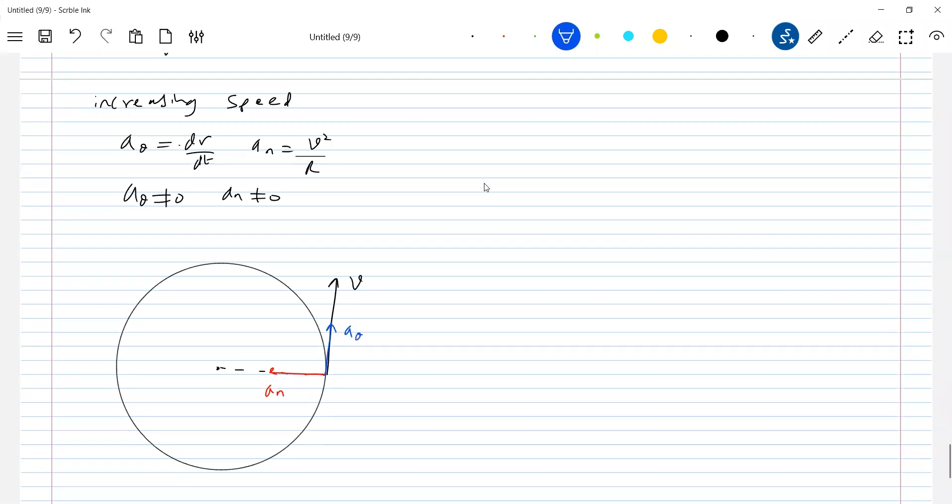A theta, total acceleration vector A, and this is beta.